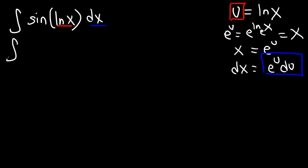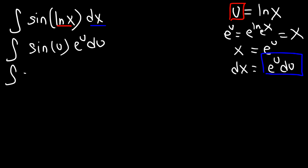This gives us the integral of sine u times e to the u du. Now in order to integrate this expression, we need to use integration by parts, and we're going to have to do it two times.